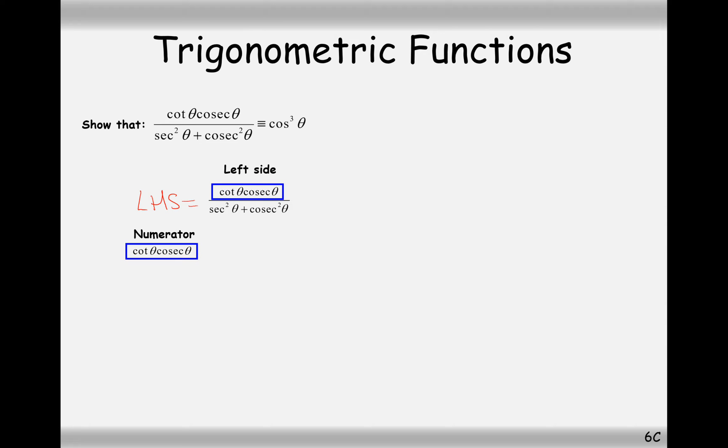Looking at the numerator here, we have cos theta and cosec theta. We can rewrite both of these as cos theta over sine theta times 1 over sine theta. So, in this case here it's going to be cos theta divided by sine squared theta. Looking at the denominator now, sine squared plus cosec squared. What can we do with this? We can rewrite both of them as 1 over cos squared plus 1 over sine squared, and group these together.